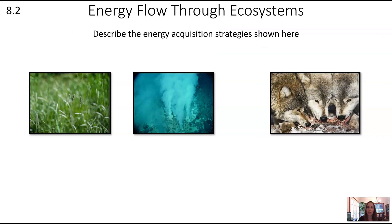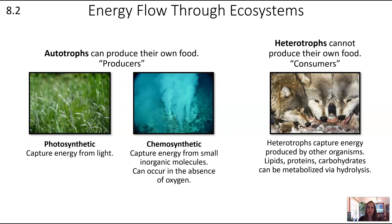Describe the energy acquisition strategies shown in these pictures. The ones on the left are autotrophs — organisms that can produce their own food; these are producers. On the left we see photosynthetic organisms capturing energy from light, like plants. There are also chemosynthetic organisms that capture energy from small inorganic molecules even in the absence of oxygen — often found in deep sea vents.